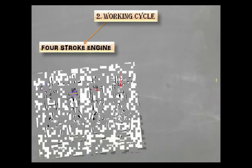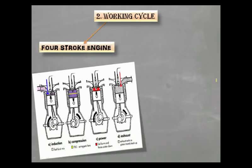Second category is working cycle. Based on the working cycle of an engine, IC engine can further be classified as first, 4-stroke engine. It is an internal combustion engine in which the piston completes 4 separate strokes while turning a crankshaft, where a stroke is referred to the full travel of the piston along the cylinder in either direction. This 4-stroke engine produces 1 power stroke for every 2 revolutions of the crankshaft.